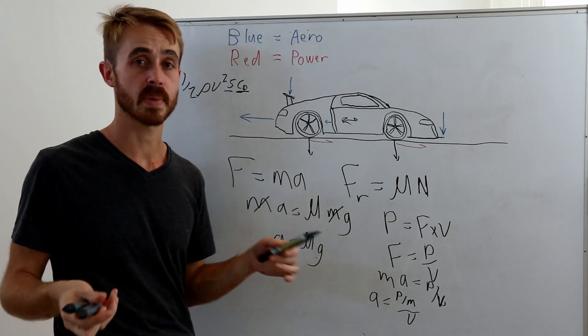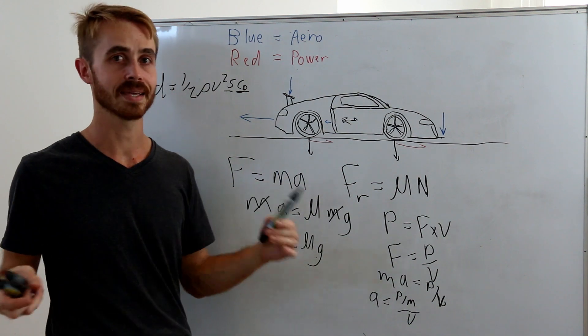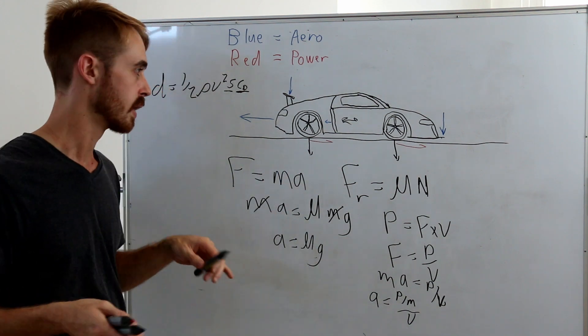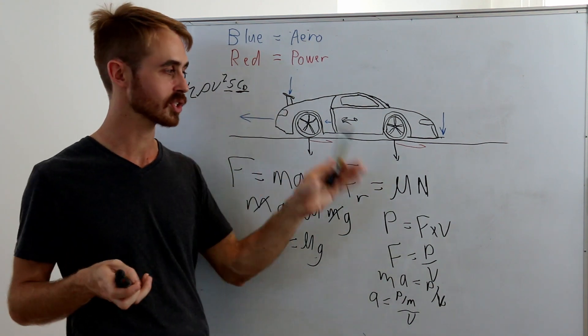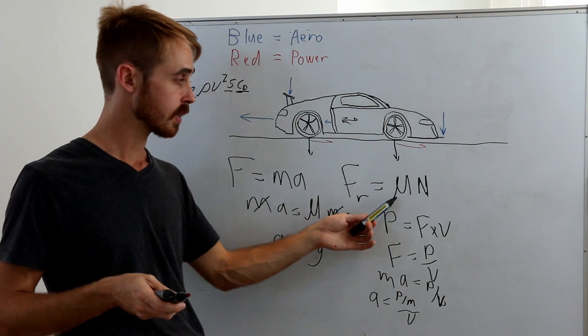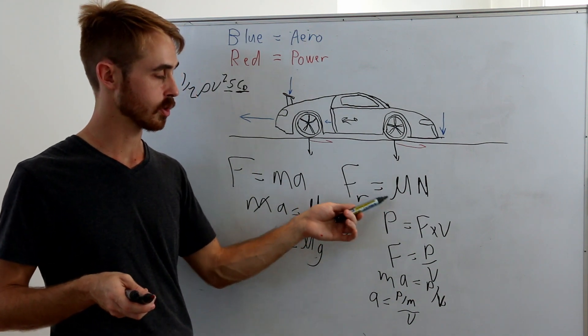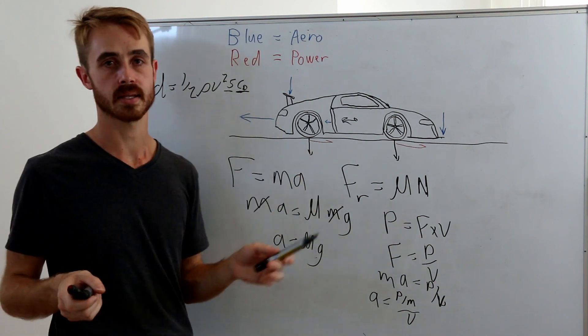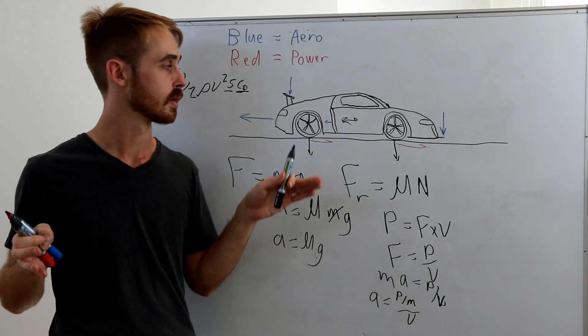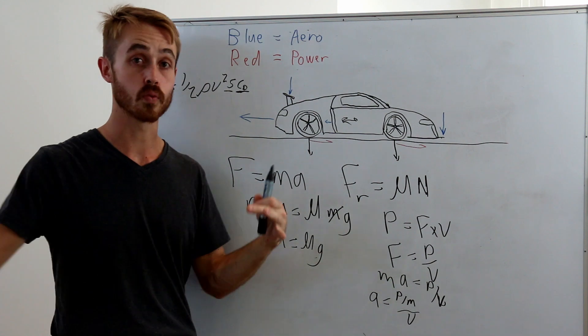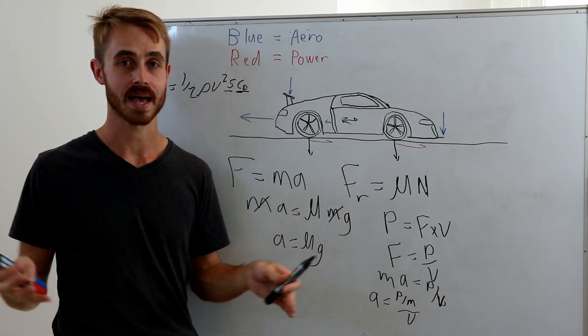Obviously due to suspension limitations and stuff like that, the heavier car is going to suffer when it comes to cornering, but we're going to ignore that because we're just dealing with straight-line acceleration. Also, another limitation is that the coefficient of friction will change, but again for straight-line acceleration, if you just fit wider tires to the heavier car, it should end up with roughly the same coefficient of friction as the lighter car.